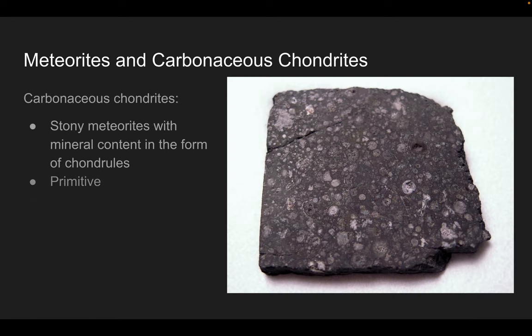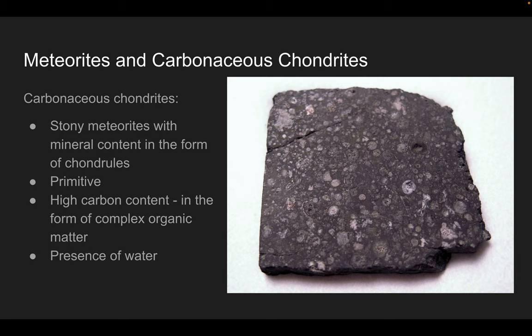So what are carbonaceous chondrites? They are a type of primitive meteorite with high carbon content formed in protoplanetary disks and representing some of the oldest minerals in our solar system. These meteorites offer crucial insights into the origins of the solar system and life itself.